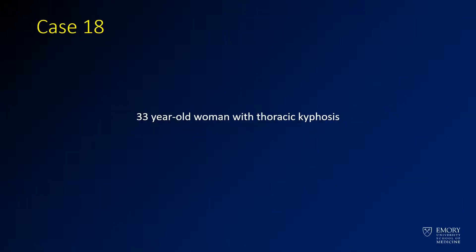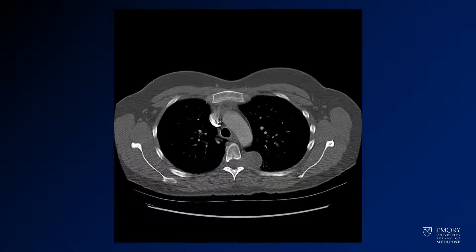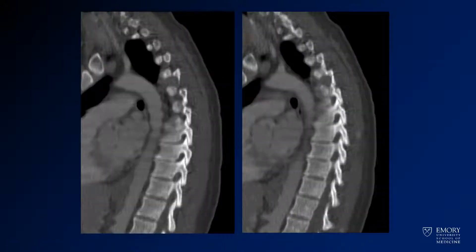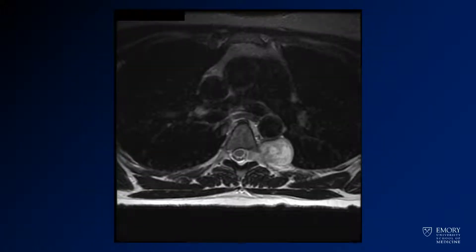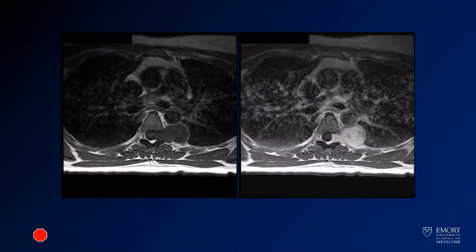Case 18 is a 33-year-old woman with kyphosis. Here you have a CT image through the level of the chest with thoracic spine. Here you have some sagittal images through that same region. This is a T2-weighted MR through the same area. Now pre- and post-contrast images through that area.